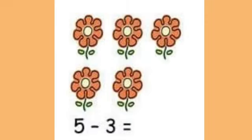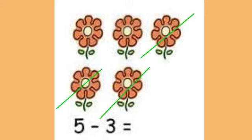See the third one. How many pictures are here? 1, 2, 3, 4, 5. Here given 5 minus 3 equal to dash. So we want to cancel the pictures — 3. 1, 2, 3. Remaining counted: 1, 2. So the answer is 2. 5 minus 3 equal to 2.